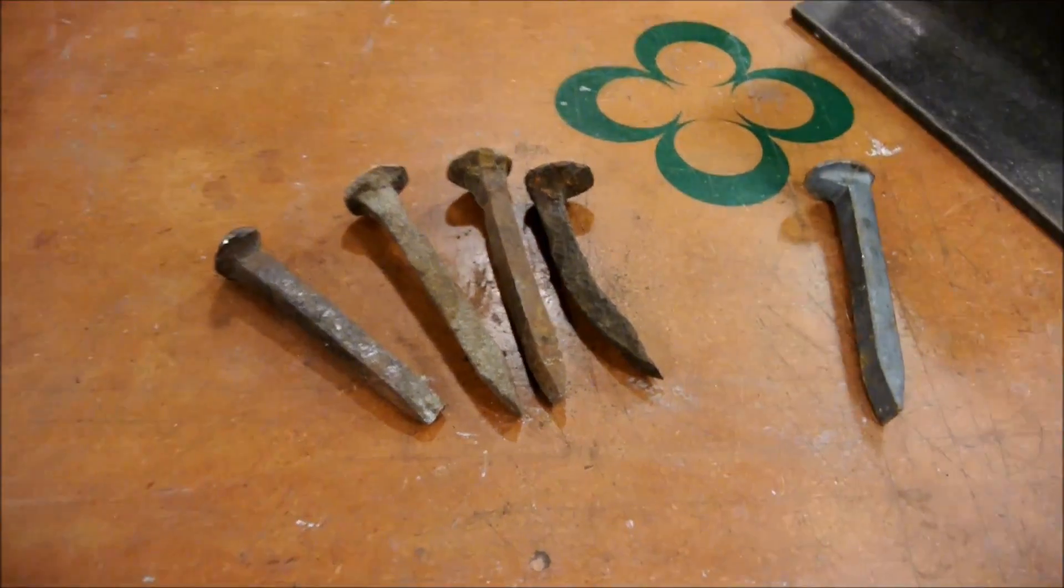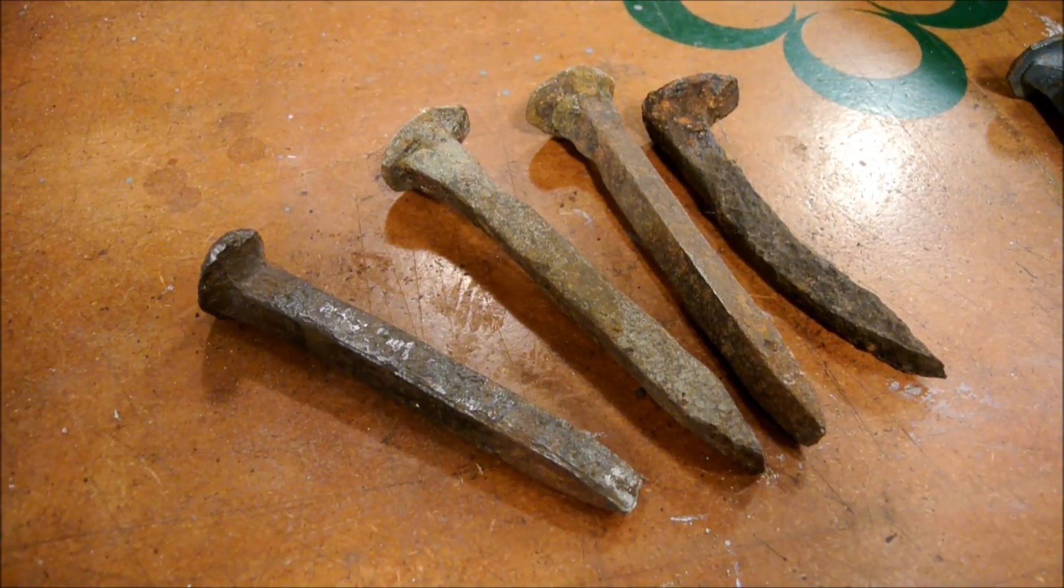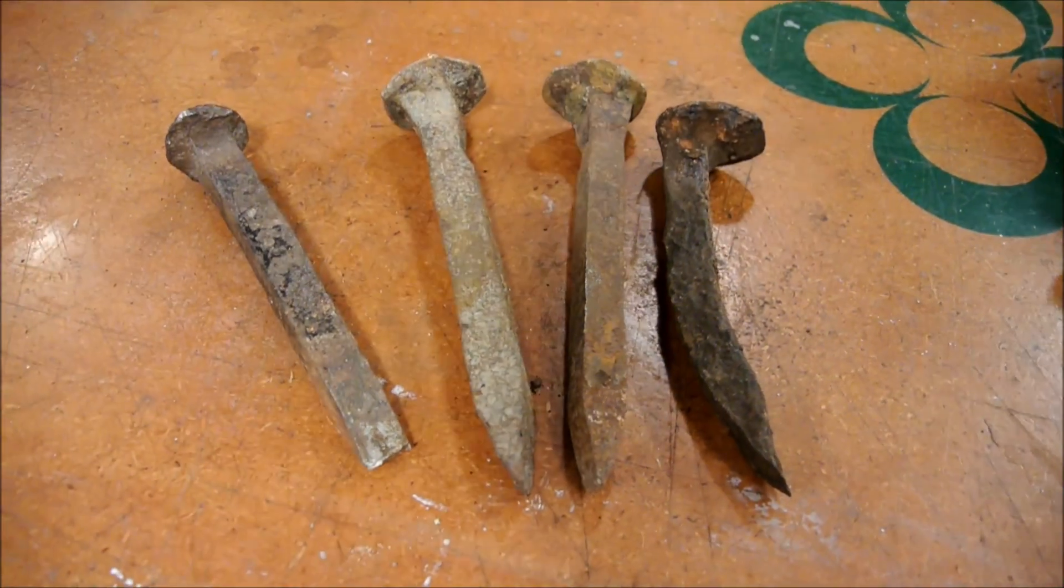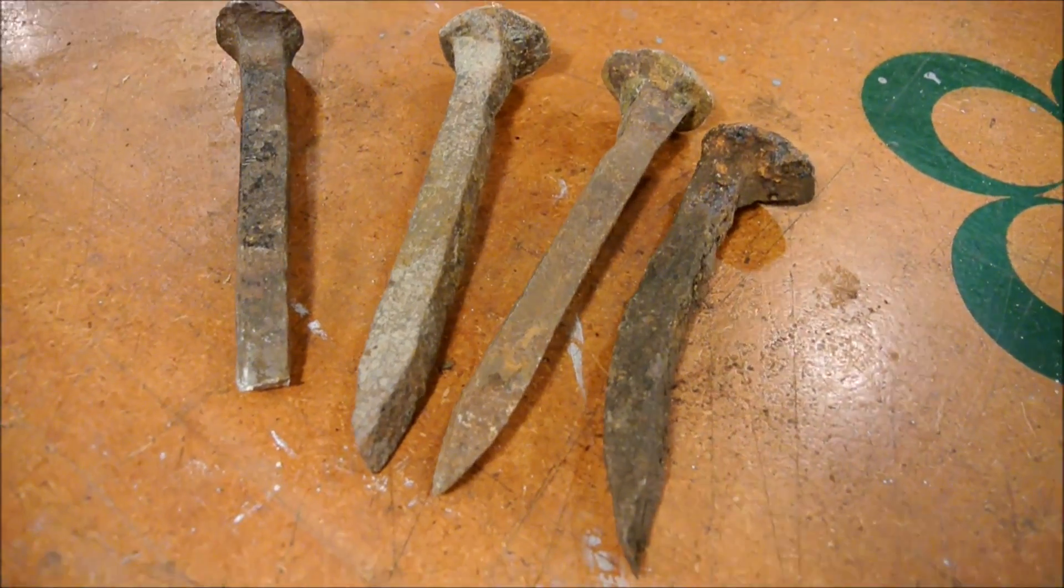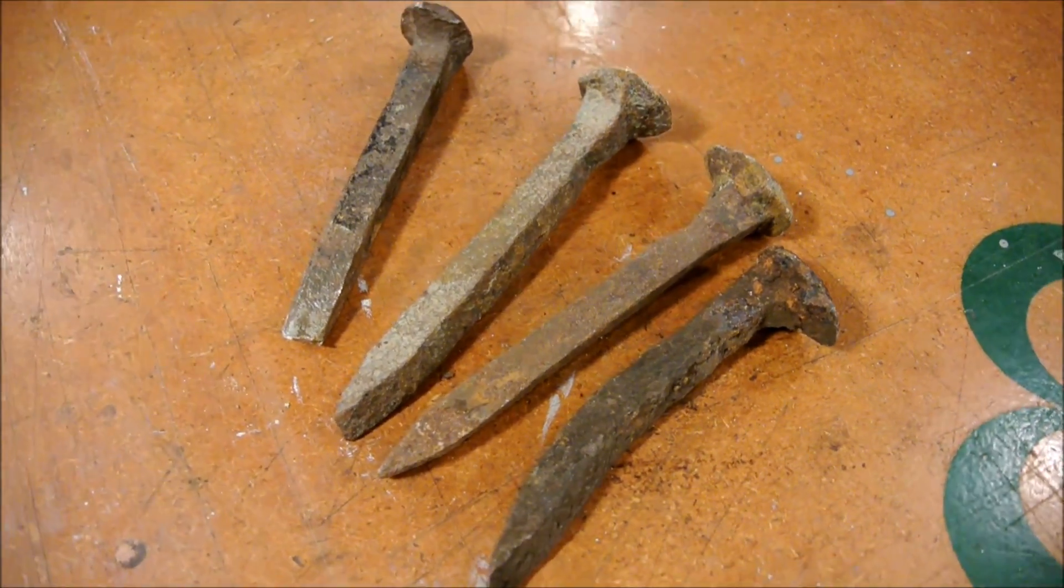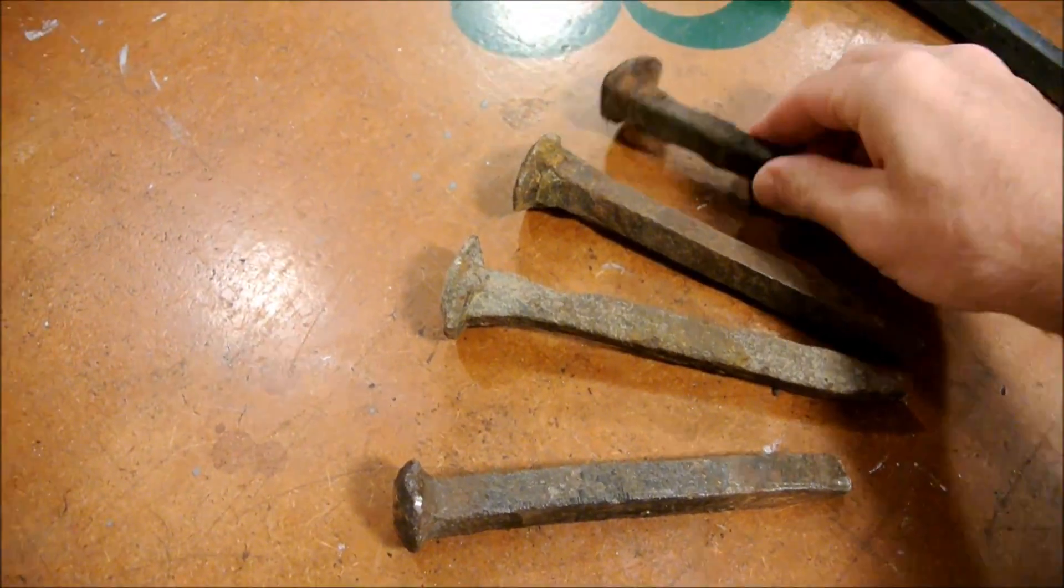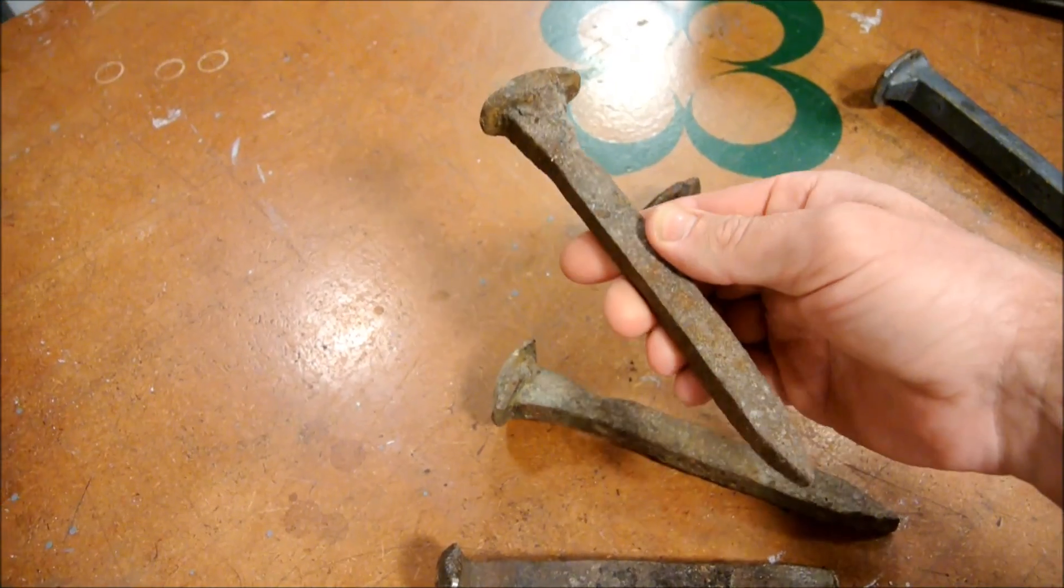Anyhow, on with the show. These are railroad spikes. And do you want to guess how old they are? Take a crack. Almost exactly 100 years. This is what 100 years of Pennsylvania does to railroad tracks, or spikes specifically.